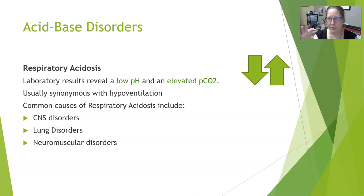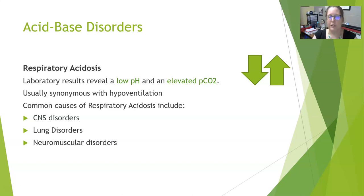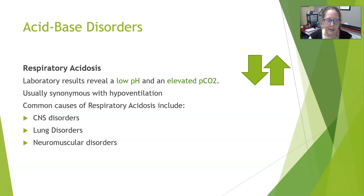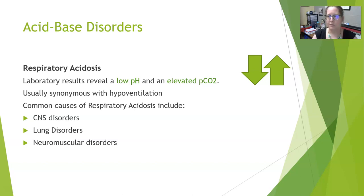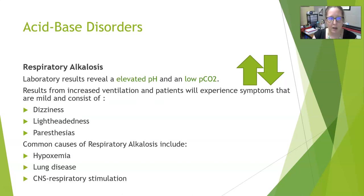In chronic COPD patients who chronically retain CO2, the CO2 will be elevated but the pH will be normal, because the body compensates by also elevating the bicarb. If the pH is normal with high CO2 and high bicarb, this indicates a chronic COPD state. However, during an acute episode, the pH will be low and CO2 will be extremely elevated. Neuromuscular disorders where breathing muscles cannot do the work of breathing — such as Guillain-Barré syndrome — can also cause respiratory acidosis.